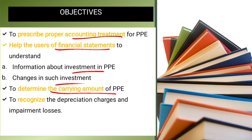PPE has a carrying amount. Carrying amount means the cost minus accumulated depreciation — that is how we get the carrying amount. The carrying amount is determined after recognizing depreciation charges and impairment losses.